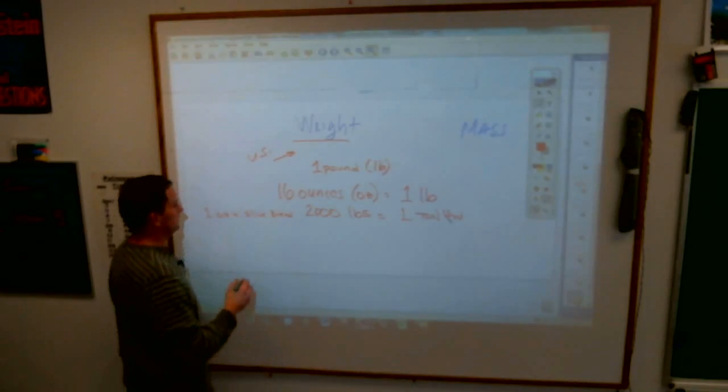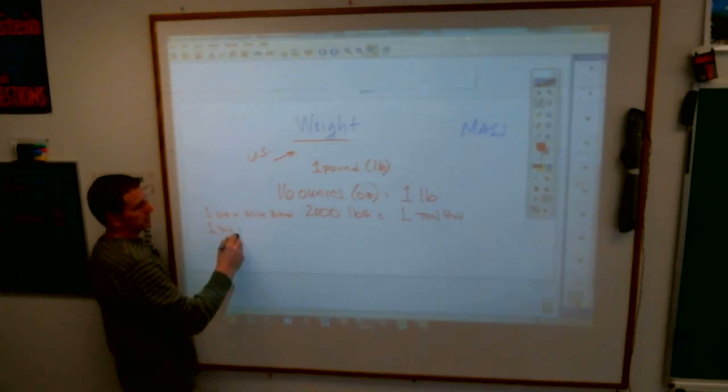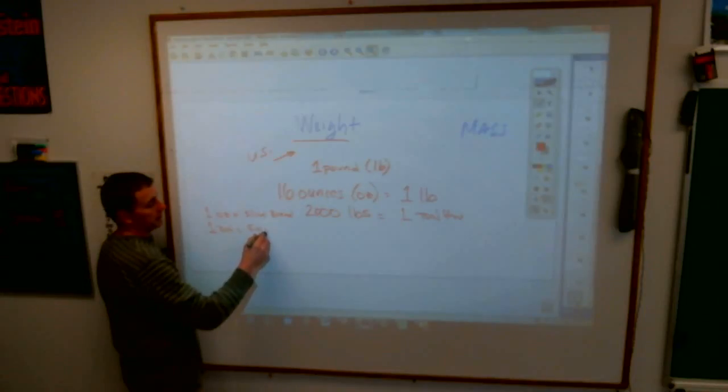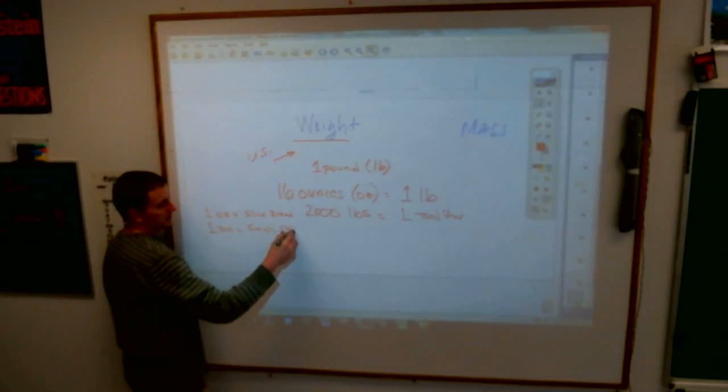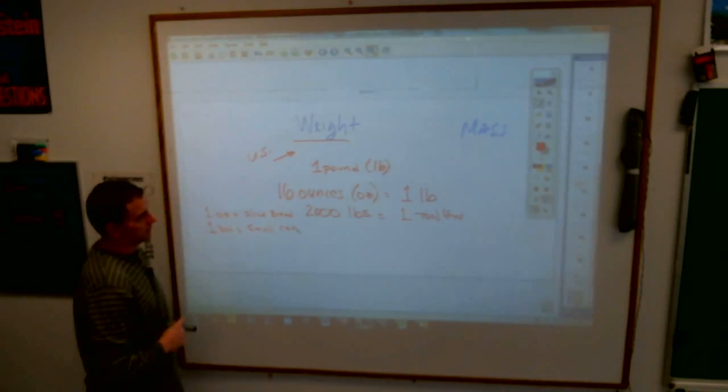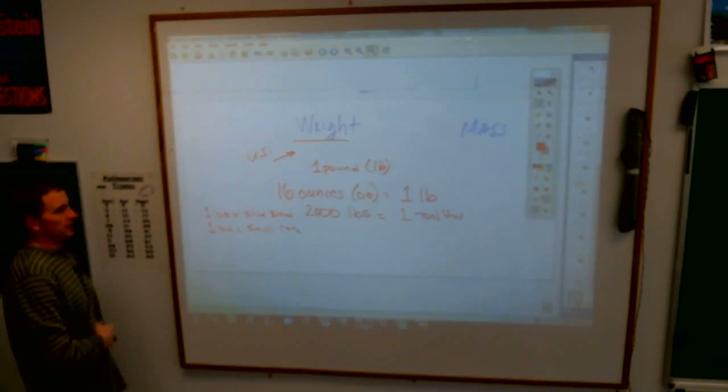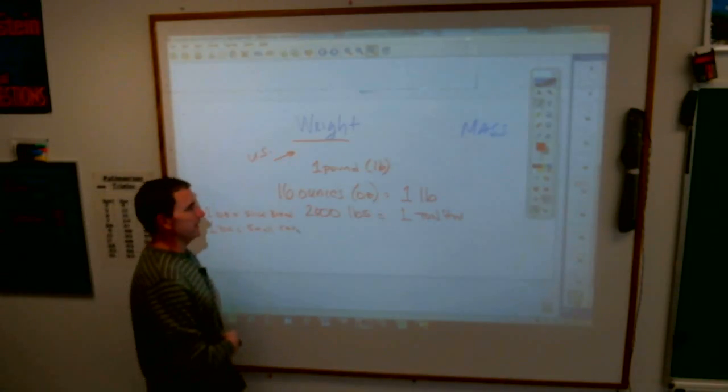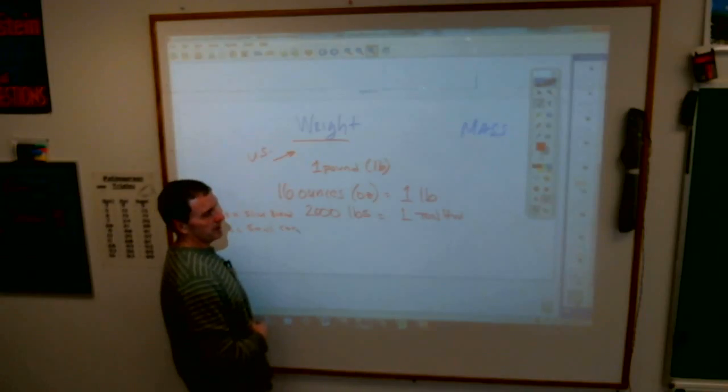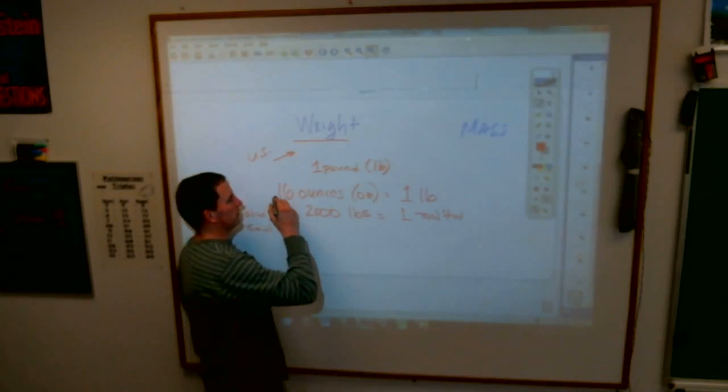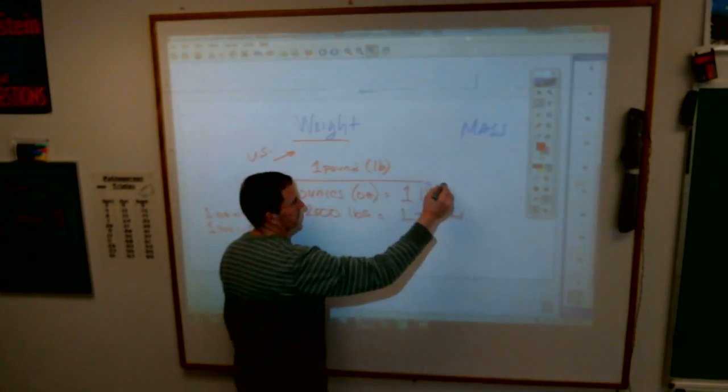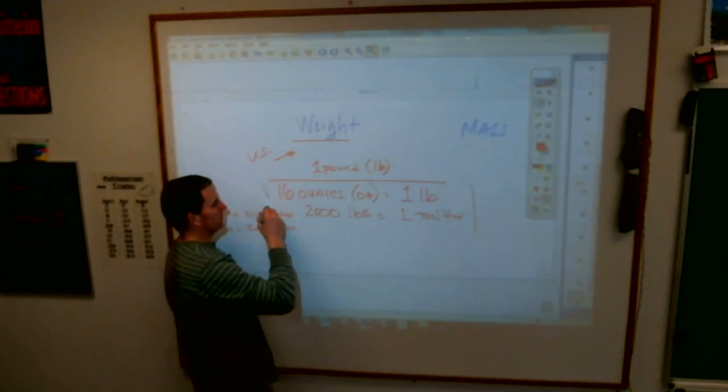And the abbreviation I guess we use for tons is TN. And a ton, one ton is about a small car, not a big car, but a small car. So those are your kind of good things there. Again, why they picked 16 ounces to be a pound and 2,000 pounds to be a ton, who knows? But these are the ones you need to know that are the U.S. whatever ones.